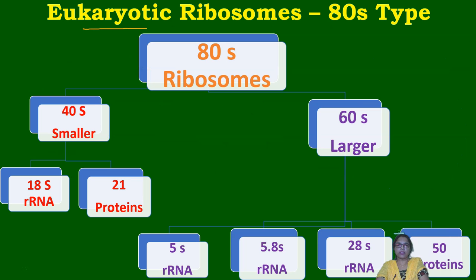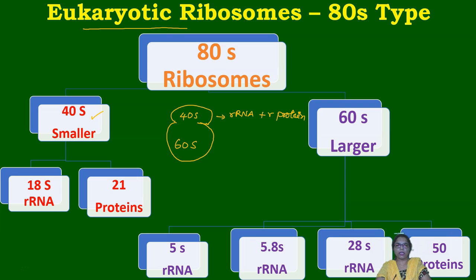80S ribosomes are present in eukaryotes and are again divided into a smaller subunit and a larger subunit. The smaller subunit is 40S and the larger subunit is 60S. Each is made of ribosomal RNA and ribosomal proteins. The 40S smaller subunit contains 18S rRNA and 30 different proteins.